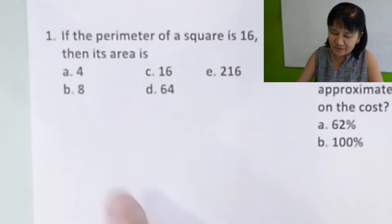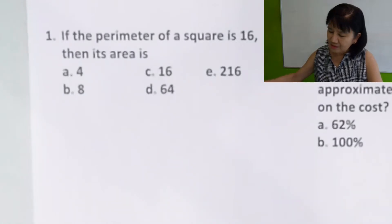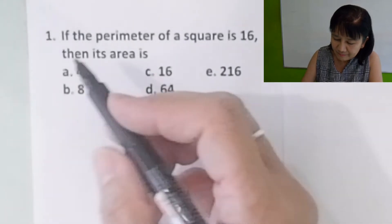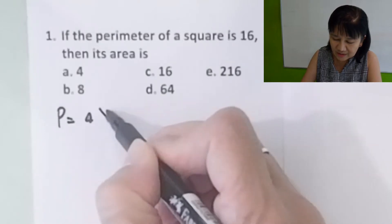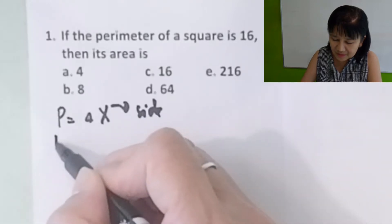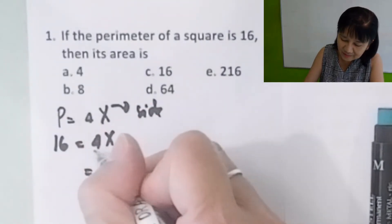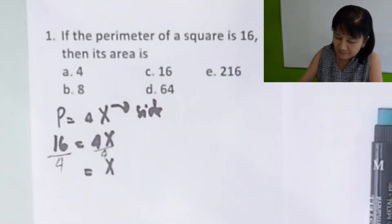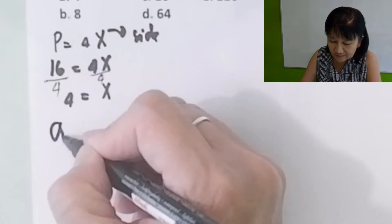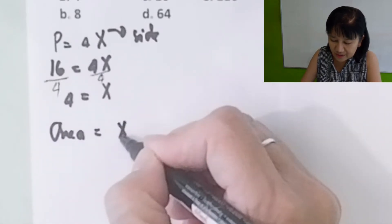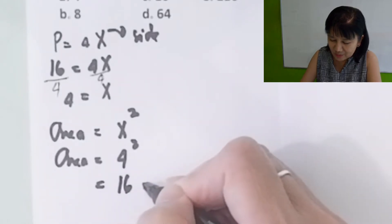Problem number one: if the perimeter of a square is 16, then its area is? We can recall that the perimeter of a square is 4 times the side. We let x be the side of the square. Since the perimeter is 16, divide both sides by 4 to get the measurement of each side, which is 4 units. So the area is side squared, x squared. The area of a square is 4 squared: 4 times 4 is 16 square units.